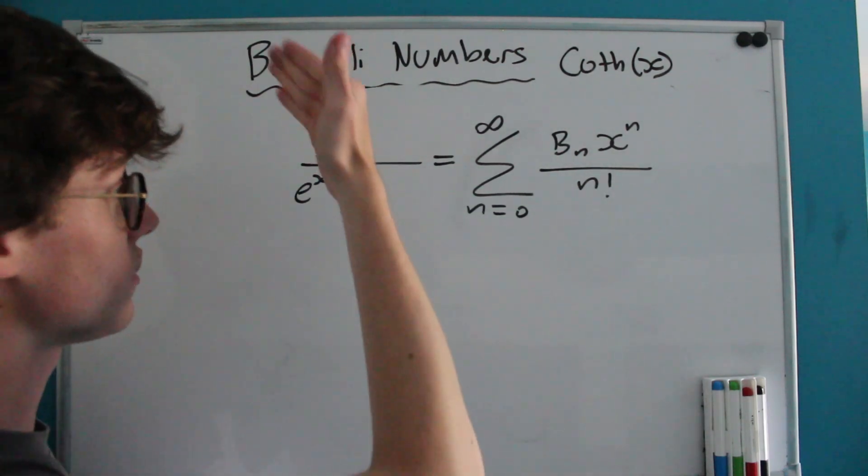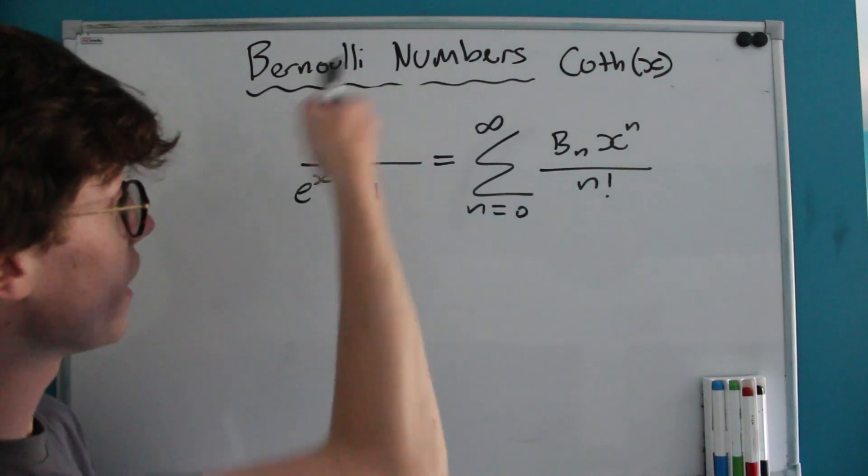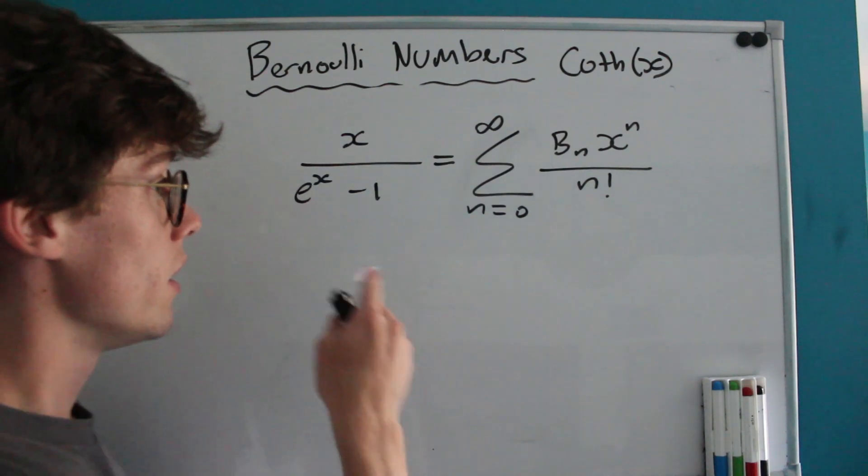This makes it very easy for us to find the nth Bernoulli number. We would just take the nth derivative of our Bernoulli generating function, which is X over e^X minus 1, and evaluate this at X equals 0.